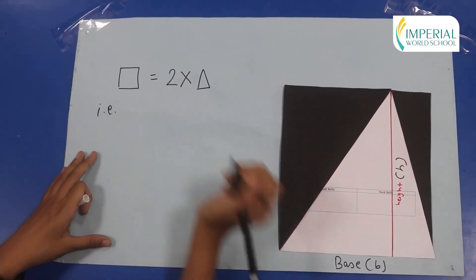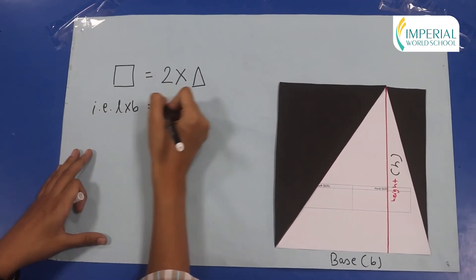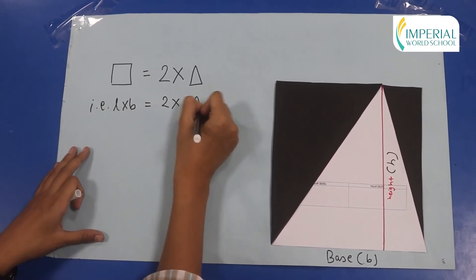That is we know that the area of rectangle is length into breadth equals to two times the area of this triangle.